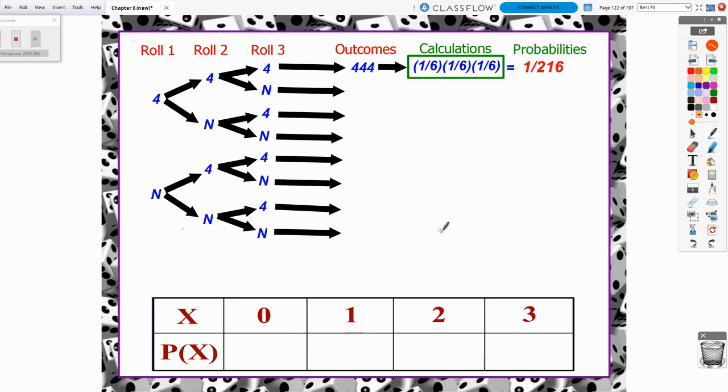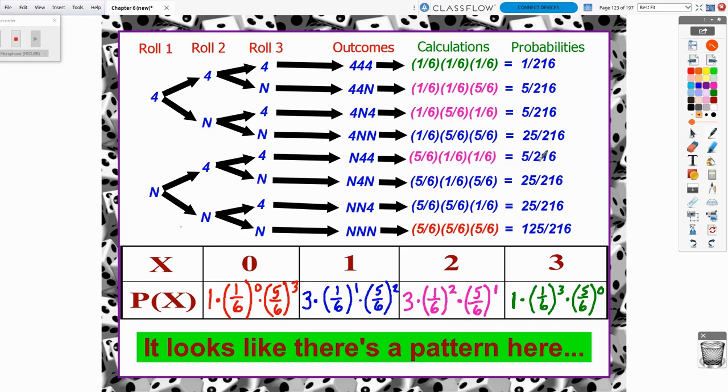So this was 1 times 5/6 to the third. And then we have 3 times 5/6 squared times 1/6 to the first. And then we have 3 times 5/6 to the first times 1/6 squared. Are you starting to see a pattern emerge? Now, for the final scenario where we saw three 4s happen, there was only one of those circumstances. And that's when we had all 4s and each of those was 1/6. So this is really 1/6 to the third power. And there was only one of those situations that emerged.